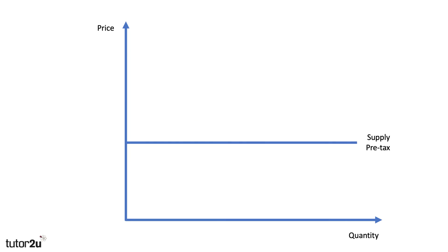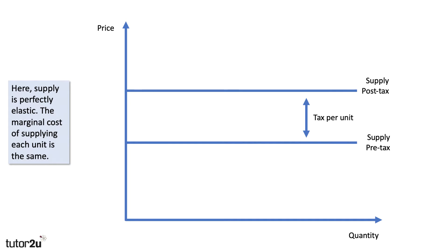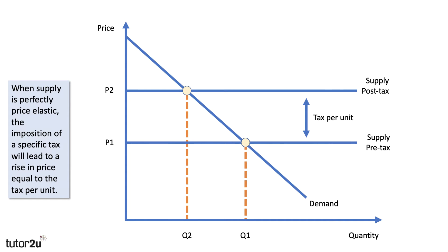It's also the case that if supply is perfectly elastic, the consumer pays the tax. Here's a situation where I've drawn a perfectly elastic supply curve — that means the marginal cost of every unit is the same; you can produce baked bean tins or bottles of Coke at the same price per unit. We shift the supply curve up by the tax, add a demand curve, and we can show that the price initially was P1 and Q1. After the tax, the quantity falls to Q2 and the price goes up to P2.